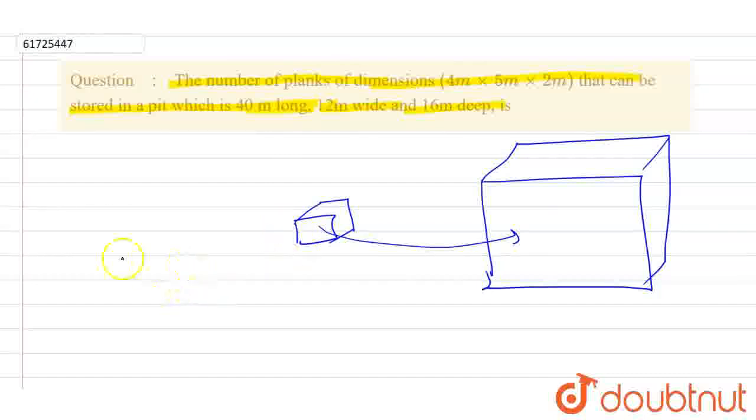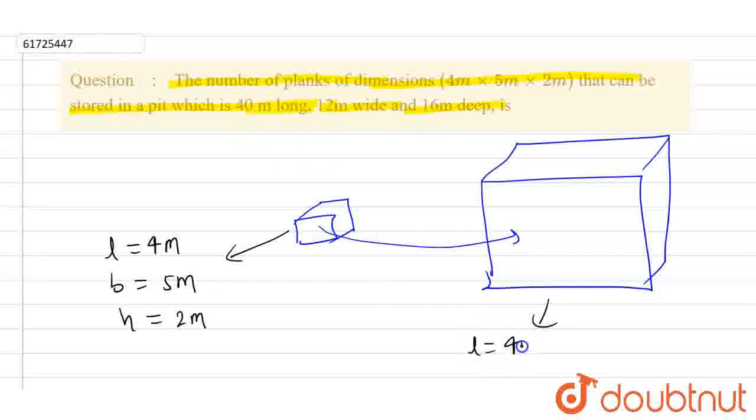So this small one has LBH. L is 4 meters, B is 5 meters, and H is 2 meters. I am talking about this. And this is LBH. L is 40 meters long, and B is 12 meters, and H is 16 meters.